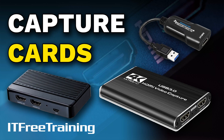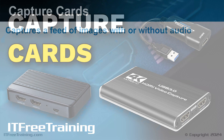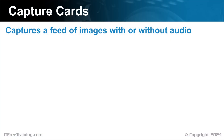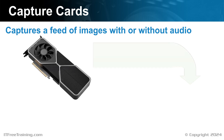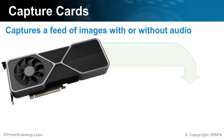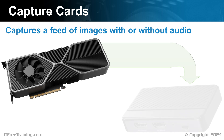A capture card essentially captures a feed of images, and may also capture audio as well, though technically it does not need to — but most do. The way a capture card works is that a video adapter outputs a feed of images which goes to the capture card. Although the term 'capture card' is often used, many of these devices nowadays are external and technically not an expansion card.